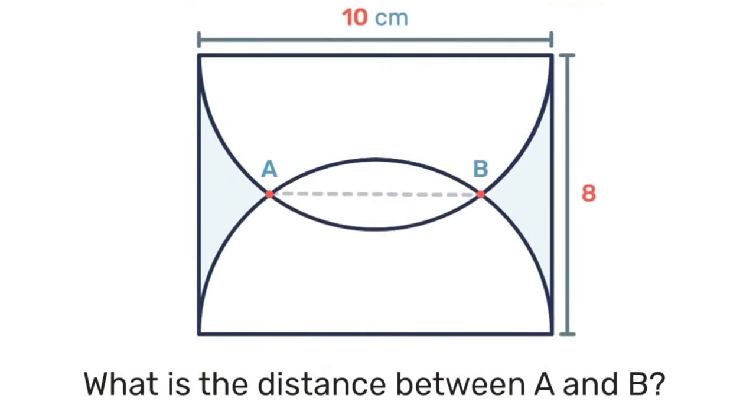In today's problem we have this rectangle which measures 10 centimeters by 8 centimeters and on the two sides of the 10 centimeters there are semicircles. We are to determine the distance between A and B.